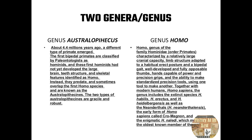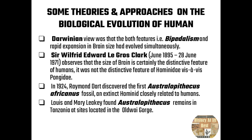About 4.4 million years ago, a different type of primate emerged — the genus Australopithecus. The first bipedal primates are classified by paleontologists as hominins, and these first hominins had not yet developed the larger brain. The genus Homo was very important in the evolution of humankind, as humans are categorized within Homo. Homo sapiens sapiens are the modern humans — the most evolved in the evolutionary aspect.